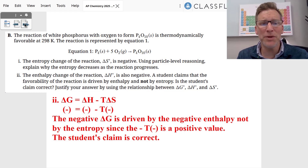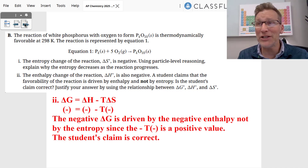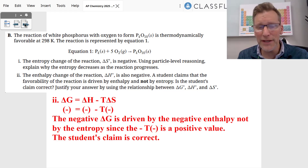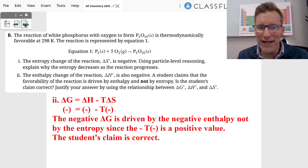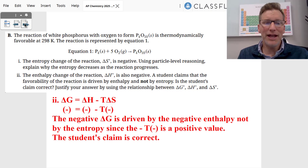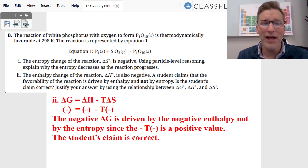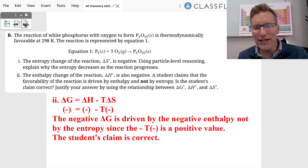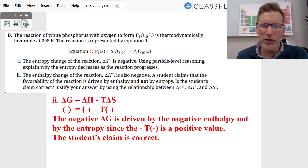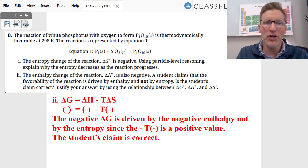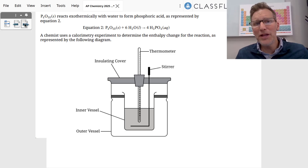For the ΔG = ΔH − TΔS problem, we know the reaction is favorable so ΔG is negative. ΔH is negative (enthalpy drives the reaction), and ΔS is negative. The negative ΔG is driven by the negative enthalpy, not by entropy, since −T times a negative value always gives a positive contribution. The student's claim is correct.